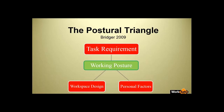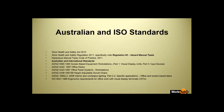That brings us to the postural triangle, which summarizes the interactions between the requirements of workspace design, the task, and the personal characteristics of the worker — giving us the working posture. What we want to achieve by doing these assessments is a good working posture. Good working posture minimizes work fatigue, and strain injuries that lead to musculoskeletal disorders are also minimized. What we're aiming for is a posture that is as close to neutral alignment of the body as possible, avoiding long periods of stretching or straining.